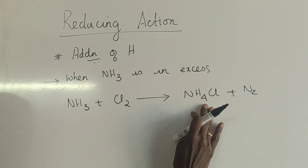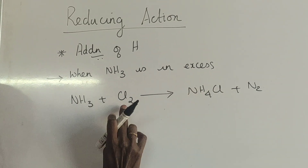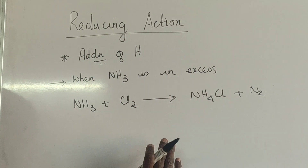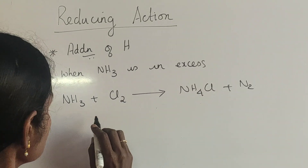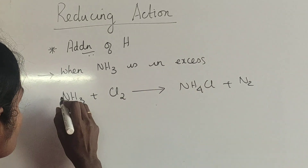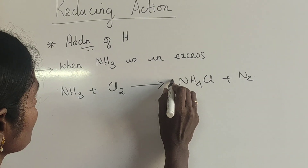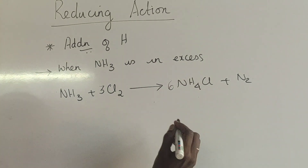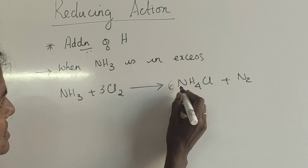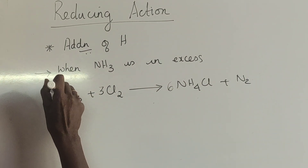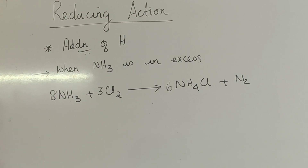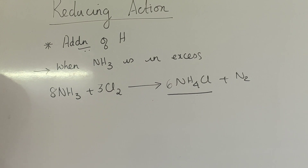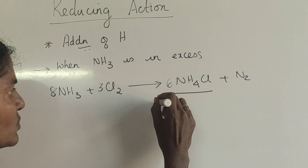When hydrogen chloride is formed, chlorine gets converted to hydrogen chloride and addition of hydrogen takes place. Balancing gives 8NH3 with the chlorine. When ammonium chloride is formed, this will give dense white fumes.